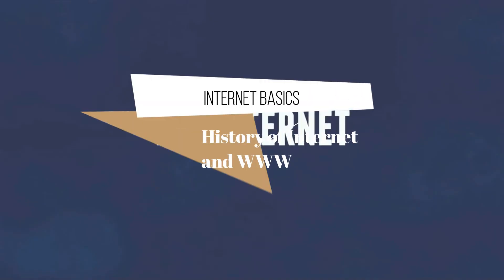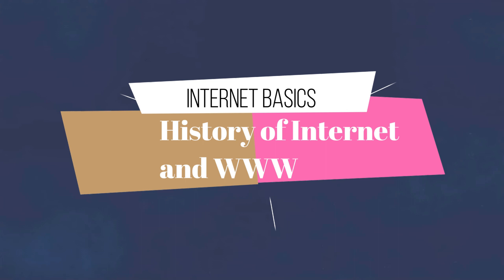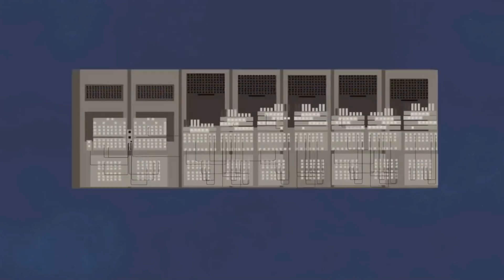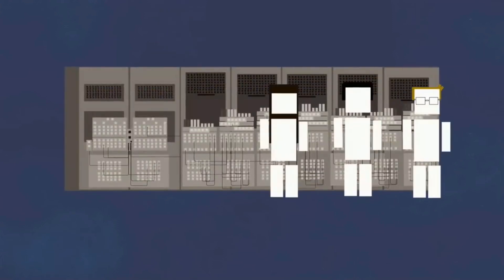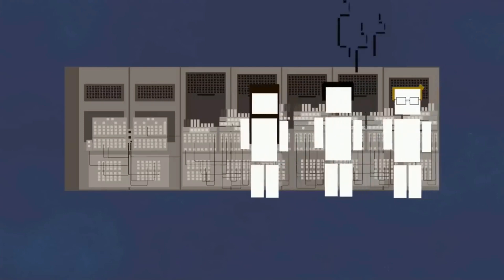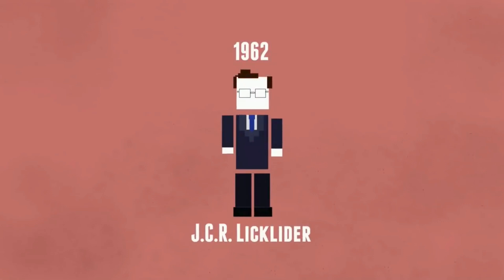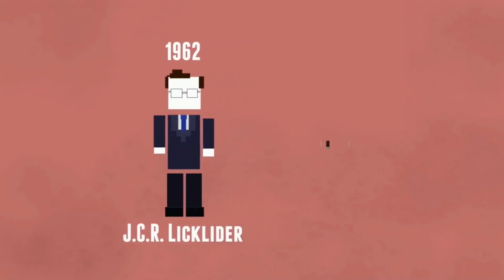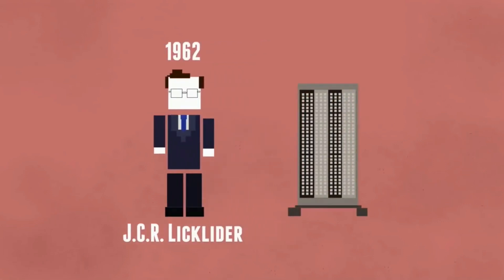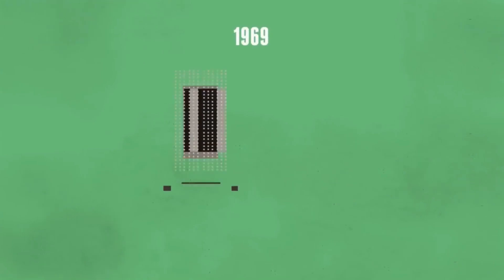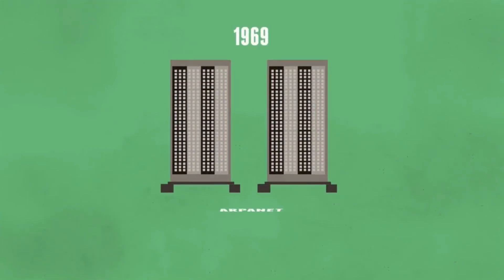The internet actually got its start over 50 years ago, and computers back then filled up entire rooms. Scientists and researchers used it for years to communicate during the Cold War. It was useful because if one computer went down, the others wouldn't follow. In 1962, a scientist named J.C.R. Lickletter proposed the idea of a network of computers that could talk to one another. In 1969, the first ever message was sent from one computer to another over the ARPANET, the government's computer network at the time.